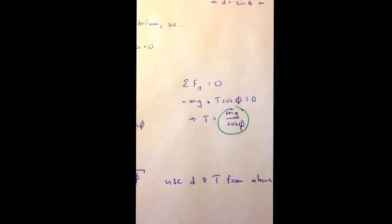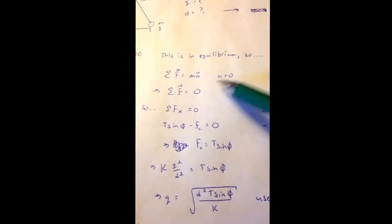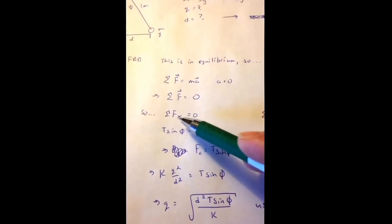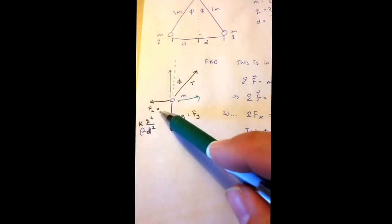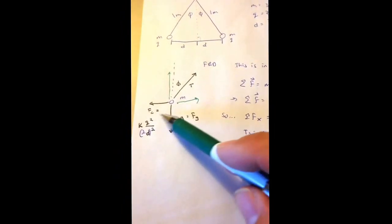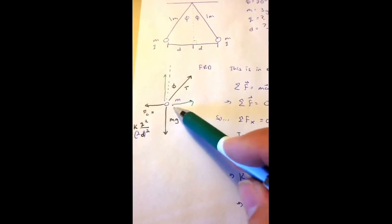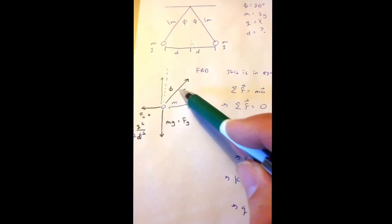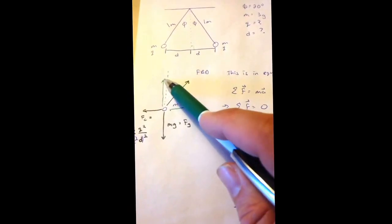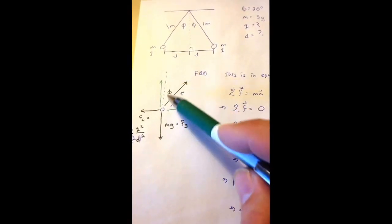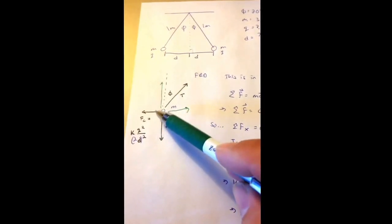So now I've got that. I've basically solved for everything I need to solve for, except for the charge, which is what I'm looking for. So now I'm going to sum the forces in the x direction, which is what I've done starting here. The x direction is zero. Let's look at that and see what that is. I've got the Coulomb force in the x direction. That's going to be negative, because it's going that way. And I've got this component of the tension in the x direction, which will be positive. So this, of course, is going to be T sine phi. Sine phi would be the side of the triangle here, which is exactly the same as this.